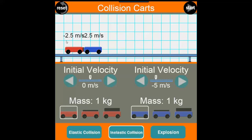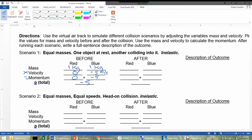We can see here that afterwards they each had a velocity of negative two point five meters per second. So here we are. For the after part, we can say one kilogram, one kilogram. And the red one had negative two point five meters per second. The blue one had a velocity of negative two point five meters per second.